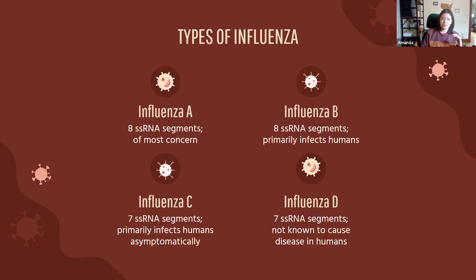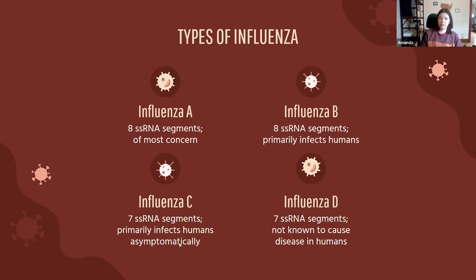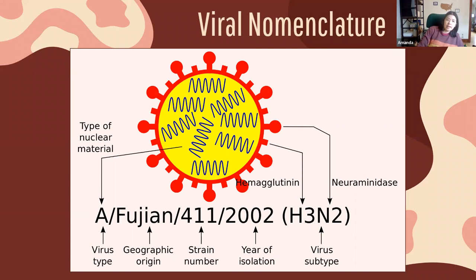Influenza can be broken down into four different subtypes named simply A, B, C, and D, differentiated by which species they can infect and how many RNA segments they have. Influenza A and B have eight segments and primarily infect humans. C and D have seven. C primarily affects humans asymptomatically and is more common in non-human hosts. D is a relatively newer influenza and is not known to cause disease in humans.